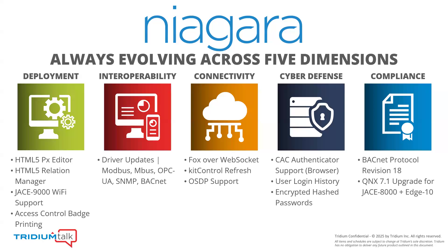We have the HTML5 Relation Manager, allowing you to see the links and relations connecting all of the points in your system. The JACE 9000 is getting Wi-Fi, so prepare to migrate anybody with the 8000 Wi-Fi integration up to the 9000 so they get the power of that device and are Niagara 5 ready. We're always upgrading our drivers to make sure they are as robust as possible, with enhancements to Modbus, OPC UA, SNMP, and BACnet to name some.